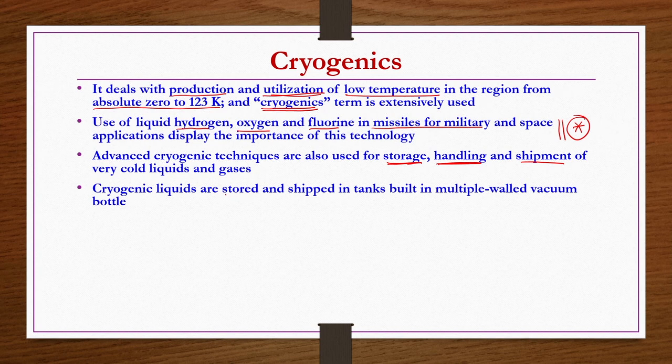Cryogenic liquids are often stored and shipped in tanks built as multiple walled vacuum bottles. Obviously, equipment or storage vessels available for storing at atmospheric conditions cannot be used for storing cryogenic material. A separate equipment design is needed so that one can easily store and transport cryogenic materials.